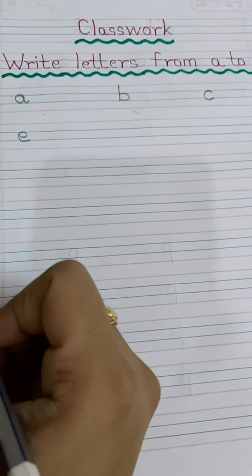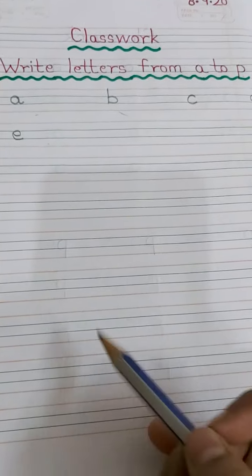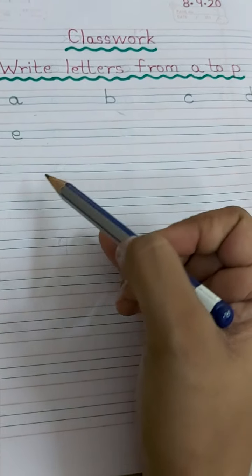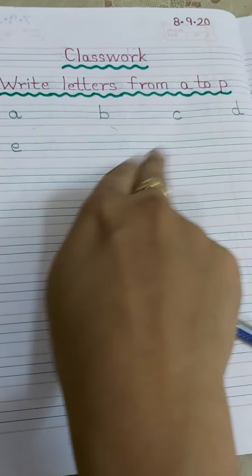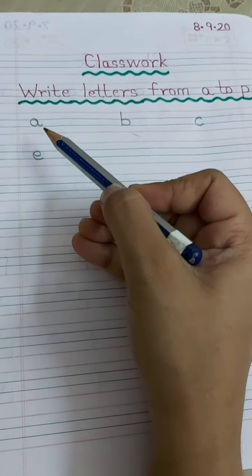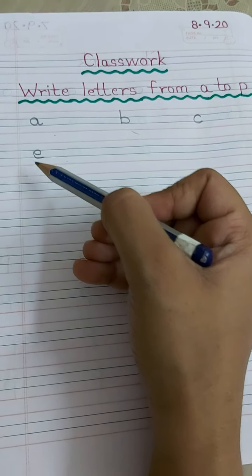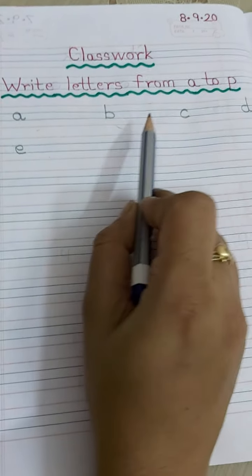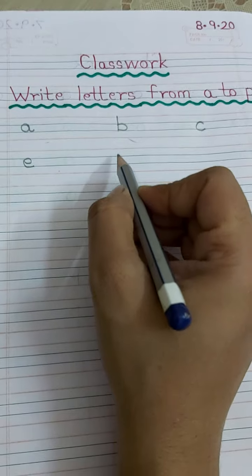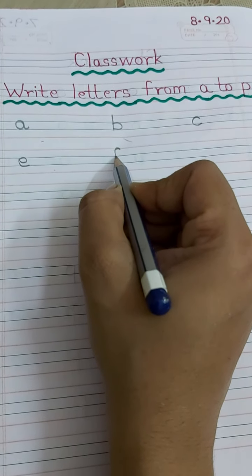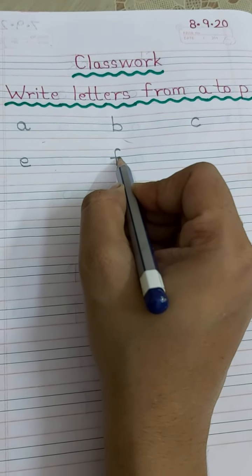E. And yes, one thing very important. You have to write in line, leaving two finger gap. Write down E under A only. Then A, B, C, D, E. Then what comes after E? F. Very good.